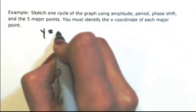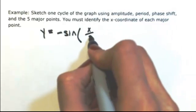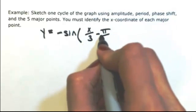Say our function is y equals negative sine of x over 3 minus pi over 2.